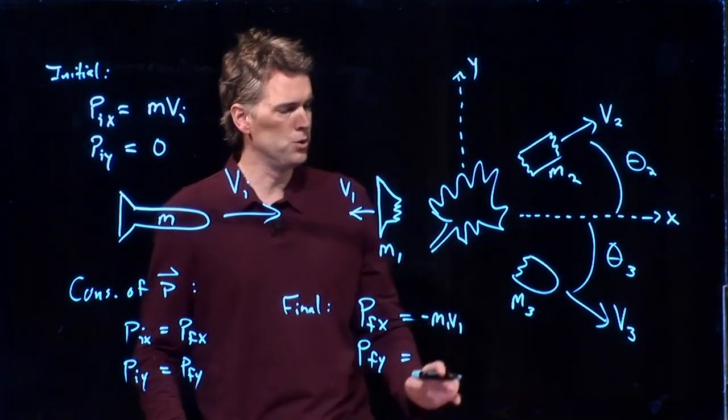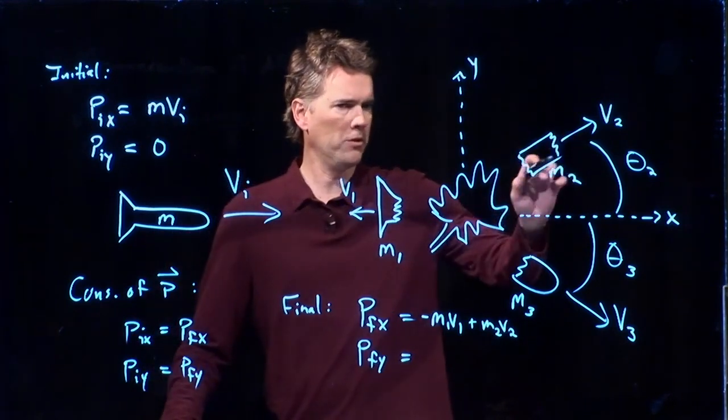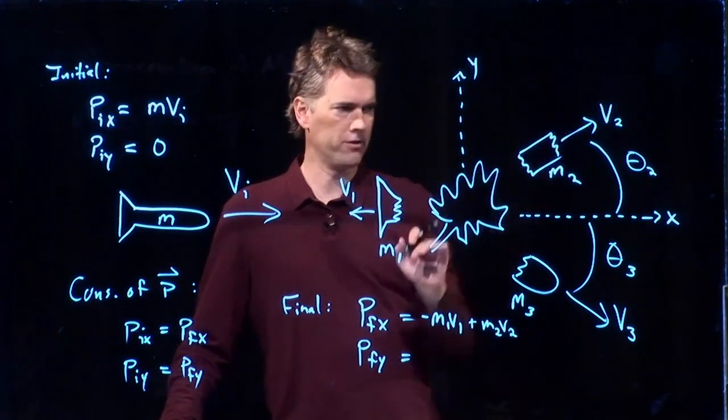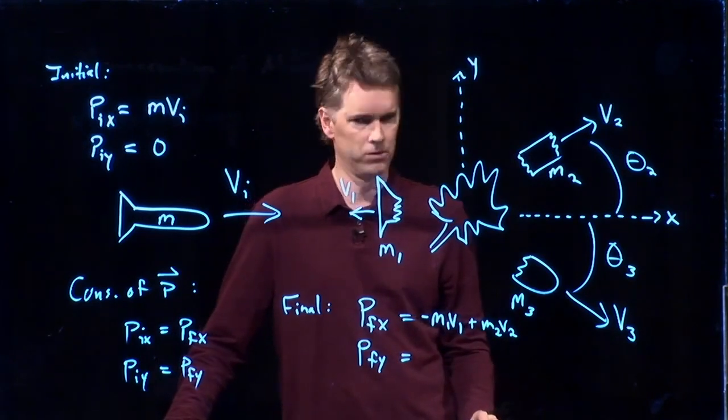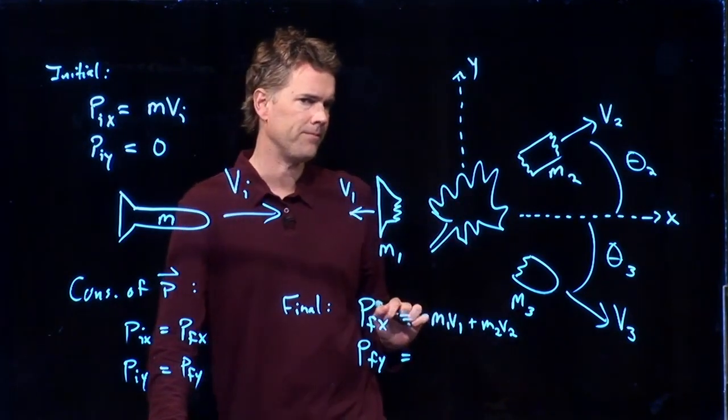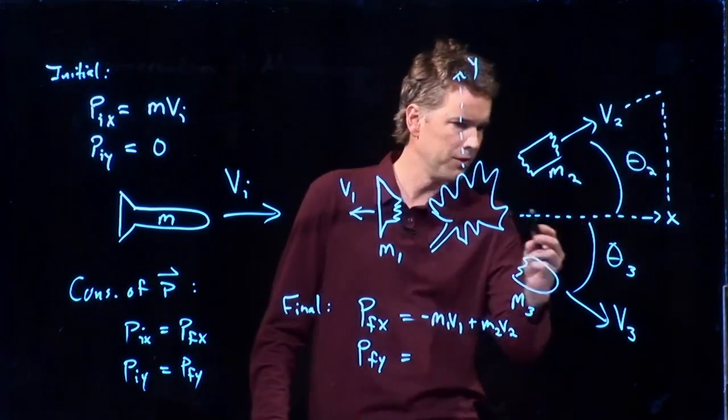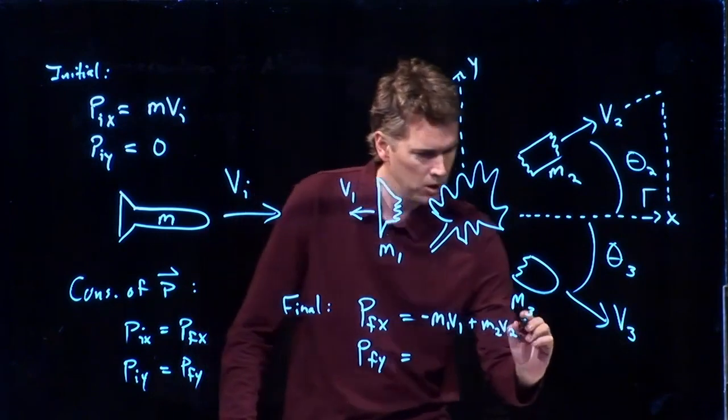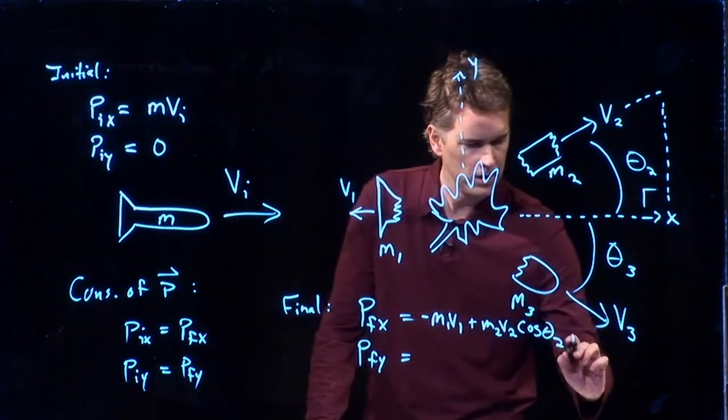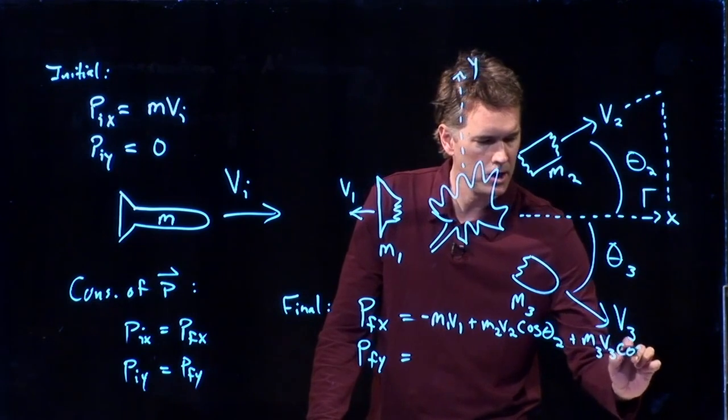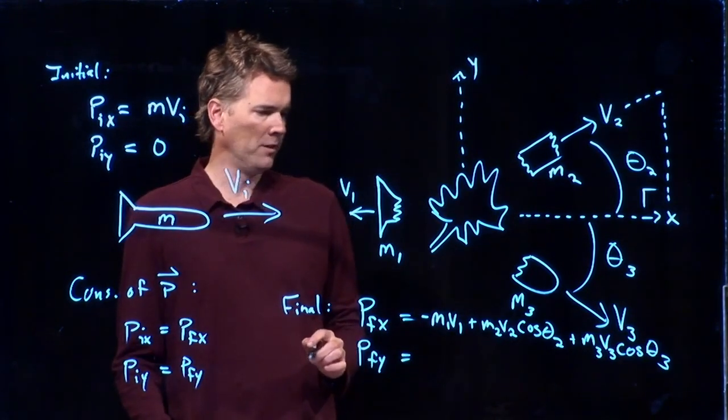What about M2 V2? M2 V2 is the momentum of this particle, but it's not entirely in the x direction. There's some component in the x direction. So Joseph, is that component in the x direction sine or cosine? Cosine? Cosine, right. This is my triangle right here, and so this side of the triangle, since this is the right angle, is going to be cosine theta 2. And likewise for M3, we're going to have M3 V3 cosine theta 3. All right, that looks complete for the x.